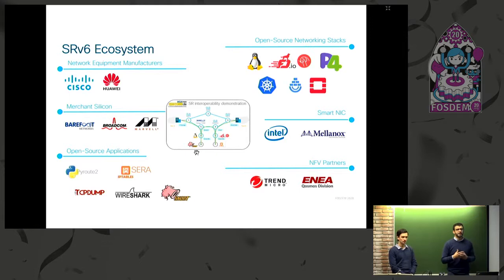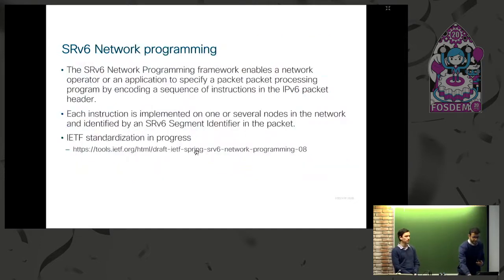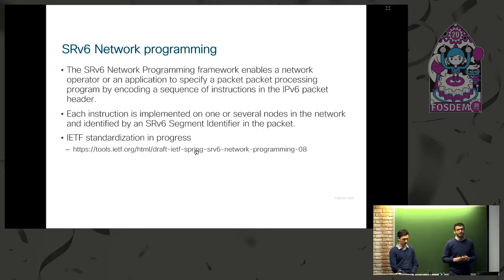SRV6 has a very rich ecosystem. When you decide to implement SRV6, you have support from network equipment manufacturers, smart NIC vendors, merchant silicon, open source, and NFV solutions. SRV6 is defined as an RFC and draft in the IETF, and it defines what is an SRV6 network program — a model where you encode in the packet the processing path, implemented as a number of segments.